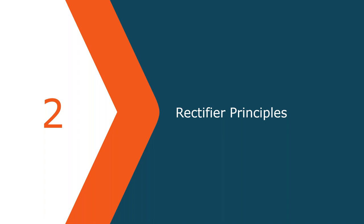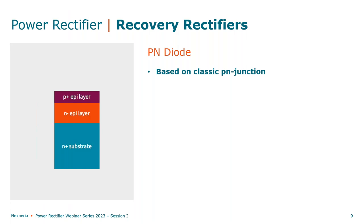I will start to explain how we understand the rectifier and the diode at its core principle. If we speak about the core principle of the diode, we're speaking about two main effects: in the forward direction we want the diode to allow current to flow, and in the reverse direction we want the diode to block the current. We need to understand these two effects, so let's briefly look at how the diode is based.